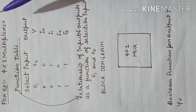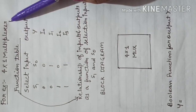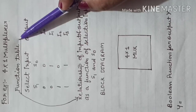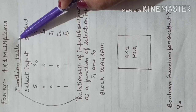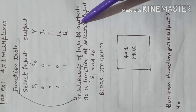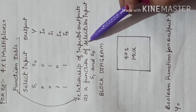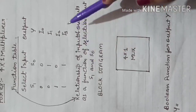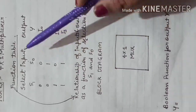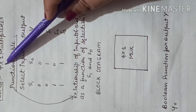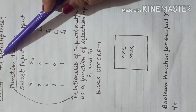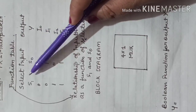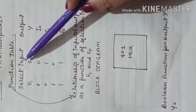Multiplexer ke concept ko achhe se samajhne ke liye hum ek example ke saath discuss karenge — maine example liya hai 4 cross 1 multiplexer ka, aur maine is ki function table banayi hai. This function table represents the relationship of input and output as a function of selection inputs S0 and S1. In the 4 cross 1 multiplexer there are 2 selection inputs S0 and S1, and their bit combinations decide which input is selected as output.